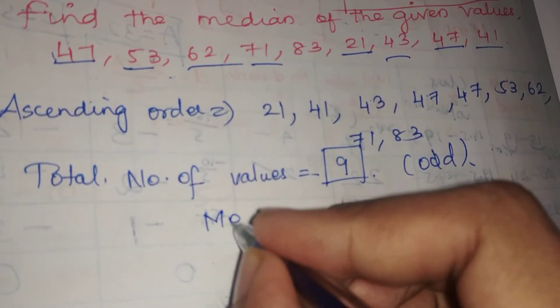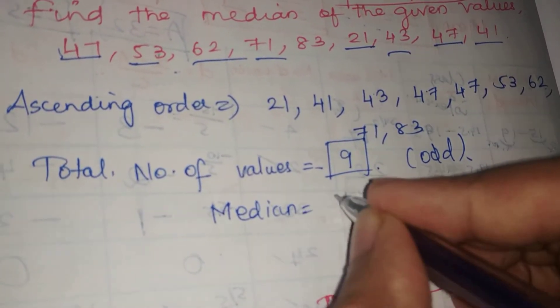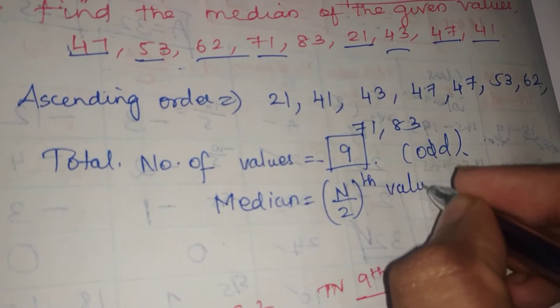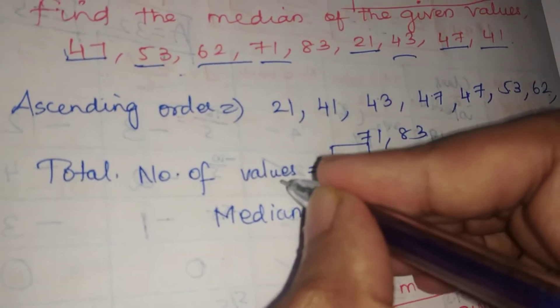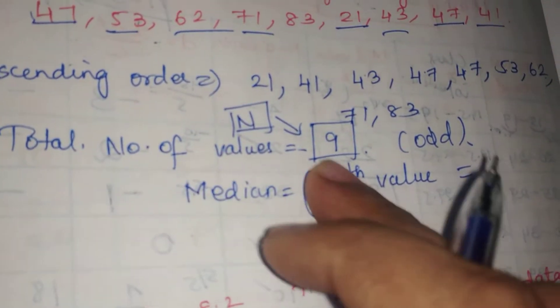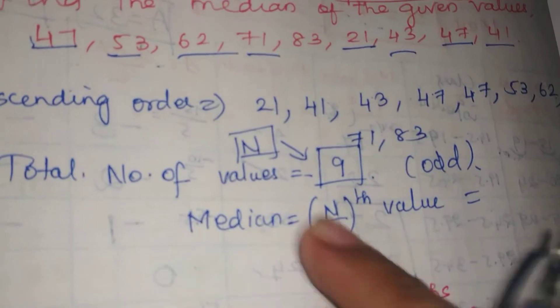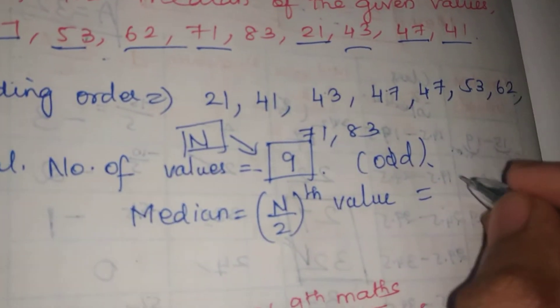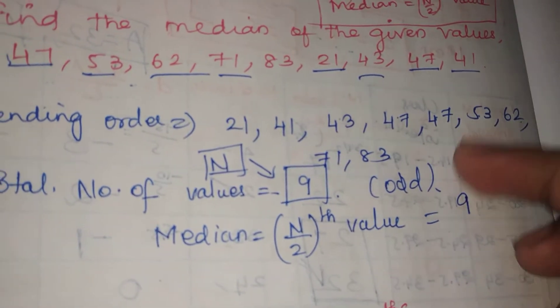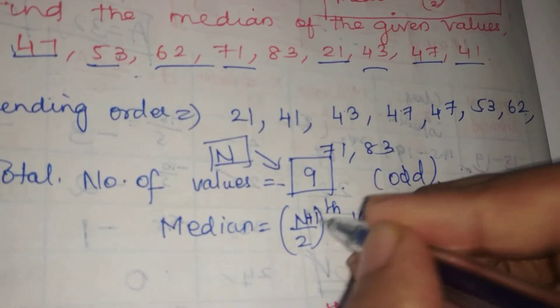The median formula: Median equals the (N/2)th value. N is the total number of values. When the number is odd, you have to use N plus 1 divided by 2 to find the value. So for odd numbers, the median is the (N+1)/2 th value.